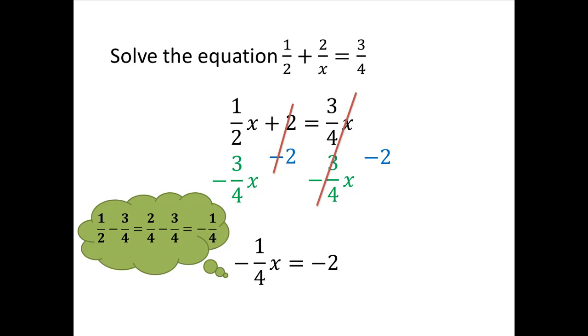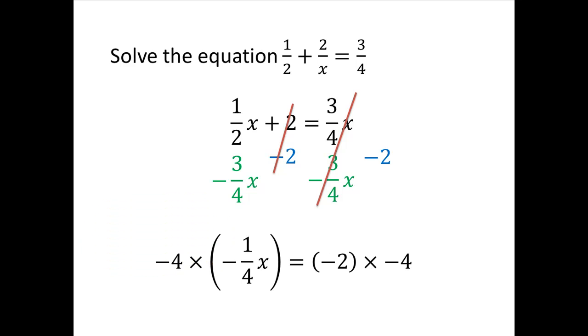So we have one more step to get the x by itself. Let's think about how we're going to get rid of that negative 1 fourth. Well the opposite of multiplying by negative 1 fourth would be to multiply by negative 4. The negative 4 and the negative 1 fourth, when we multiply those together, we get 1, so those cancel.